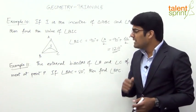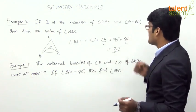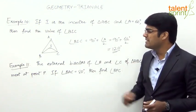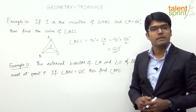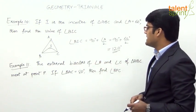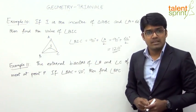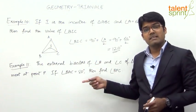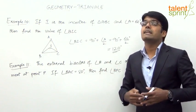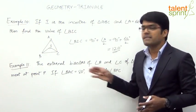Let's look at the next question. The external bisectors of angle B and angle C of triangle ABC meet at a point P. If angle BAC is 80 degrees, then find angle BPC. This is a similar question, but here we are looking at external bisectors, which we have already discussed in the context of the incenter.